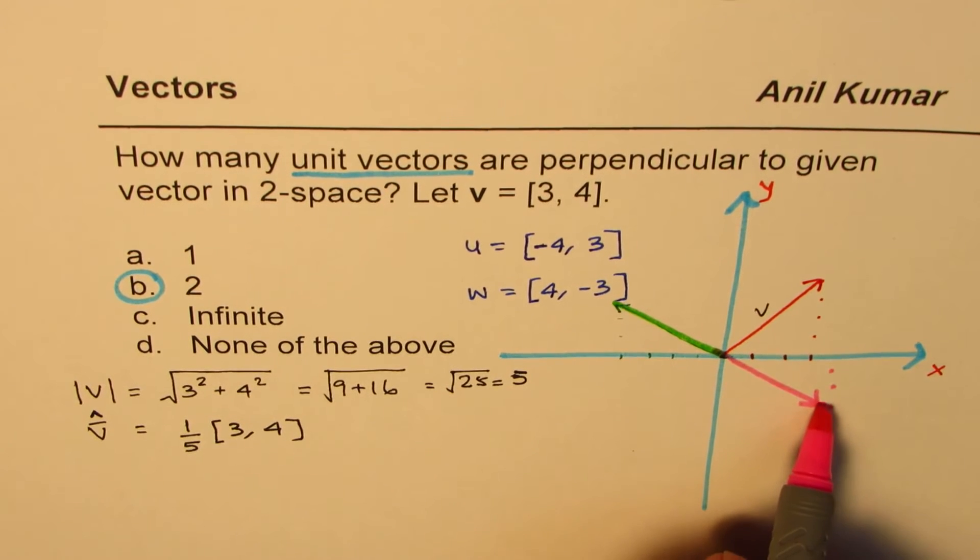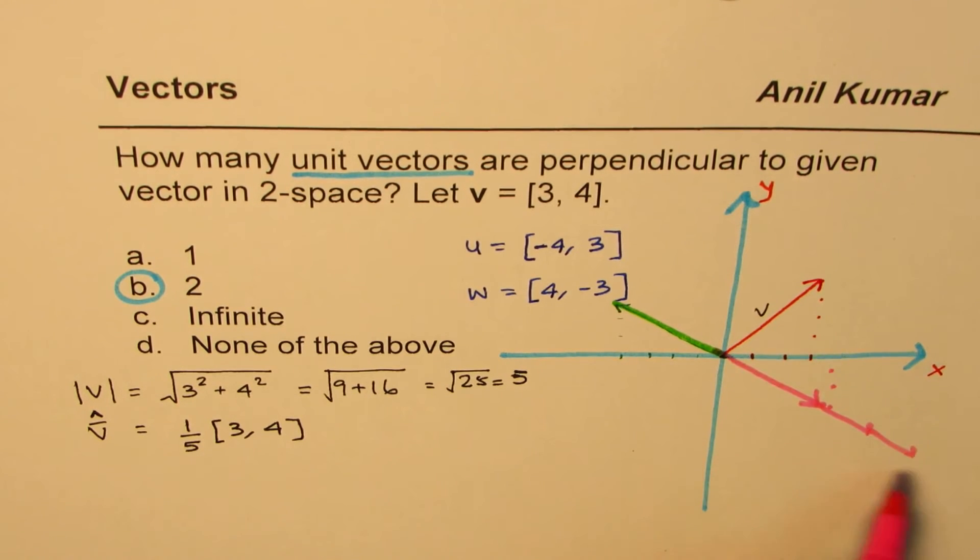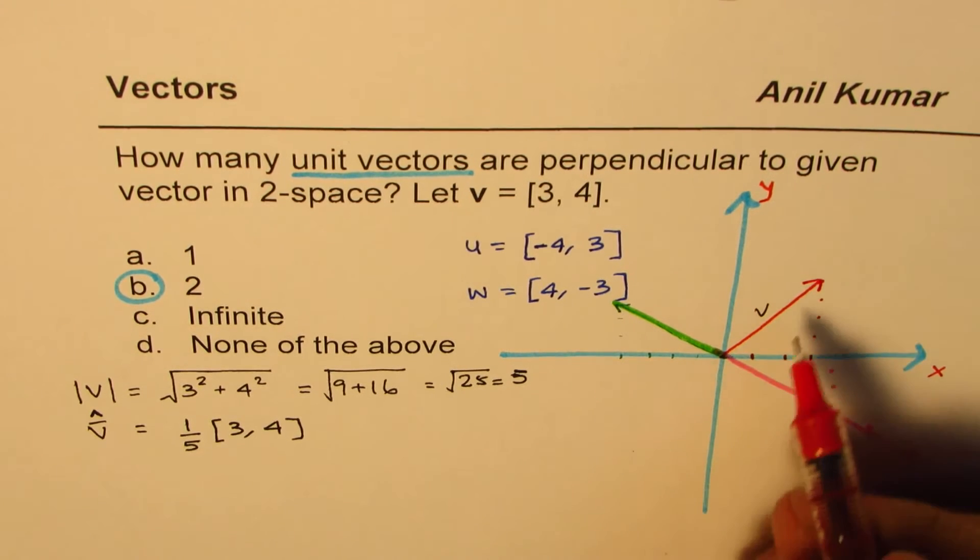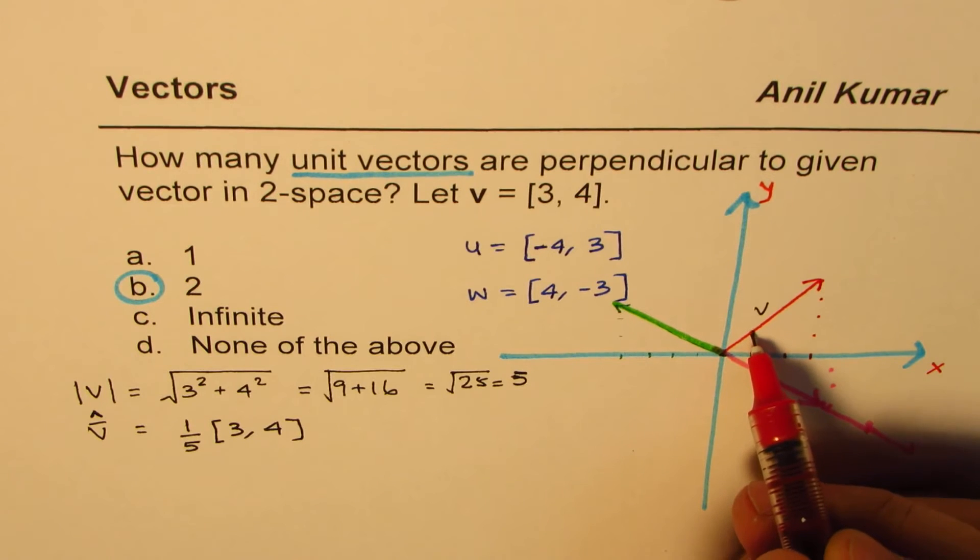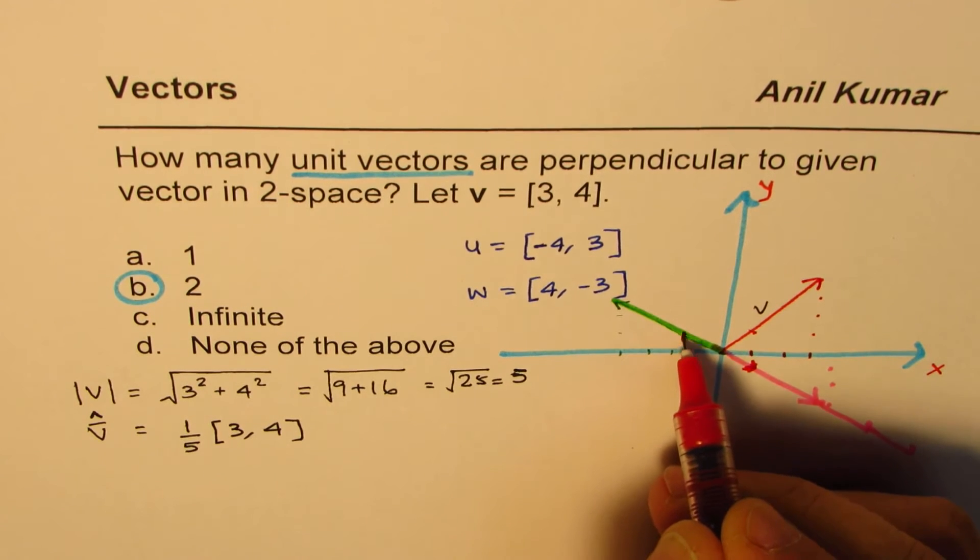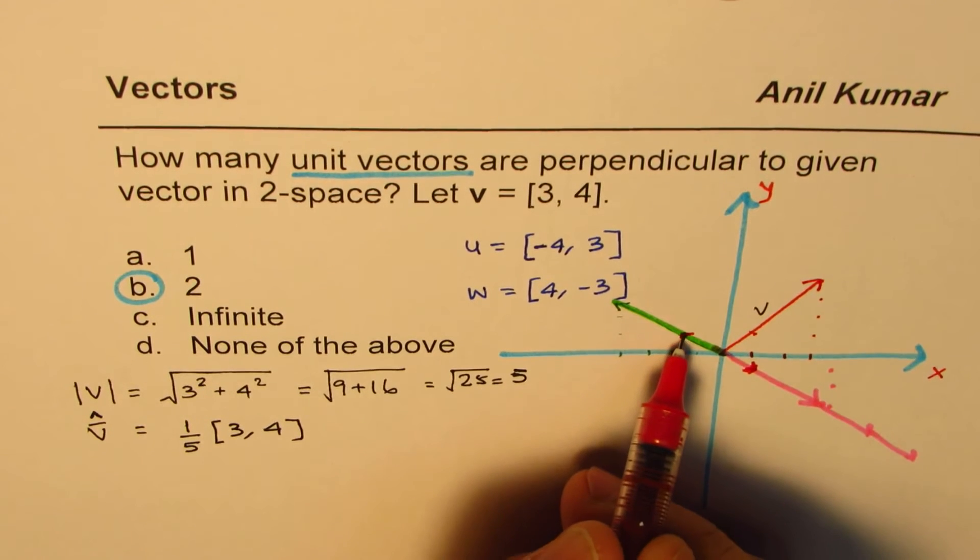These are two vectors which are perpendicular. Well, any scalar multiple of these will also be perpendicular. However, there are only two vectors whose length is one-fifth of this, which will be kind of here.